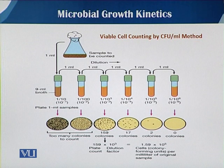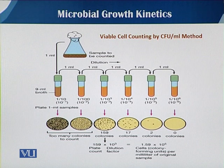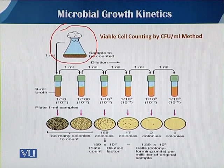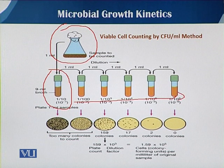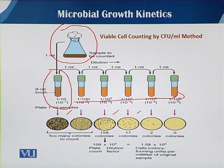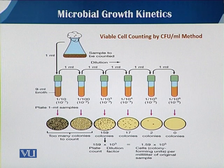When performing viable counting, we have to dilute the samples gradually, which is normally known as the dilution method. First, if we have a sample grown in a flask, we take one ml of the sample and dilute it into a specific volume, then gradually dilute further to form different dilutions. We then take a sample from each dilution and culture it on a plate. You can see the number of colonies decreasing as the dilution increases, allowing us to easily estimate the viable cells present in any culture.